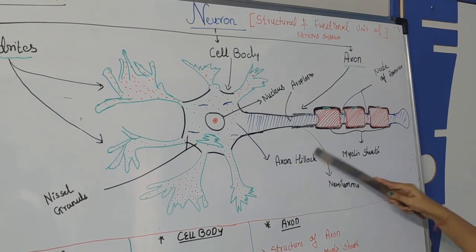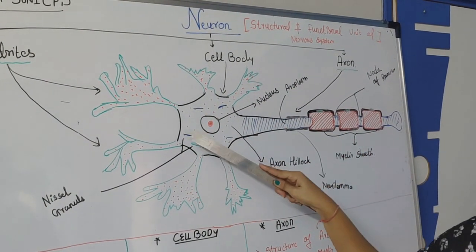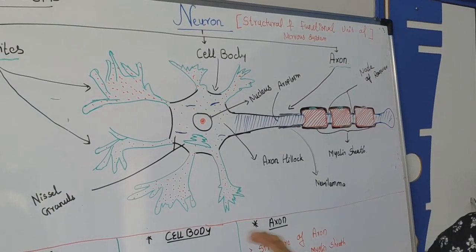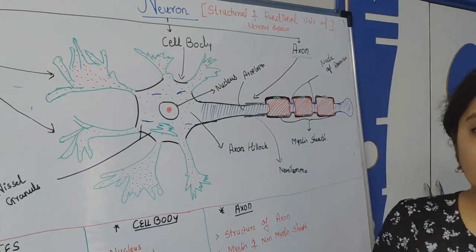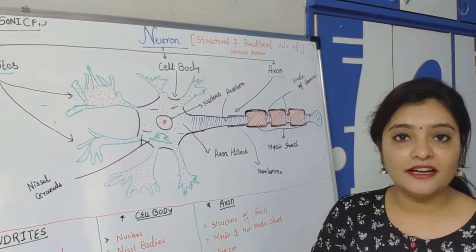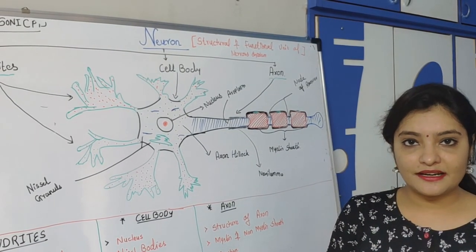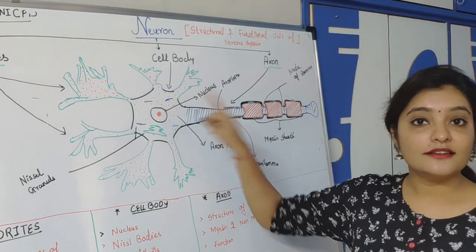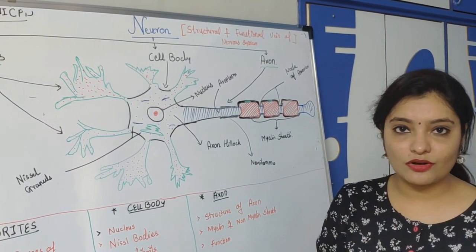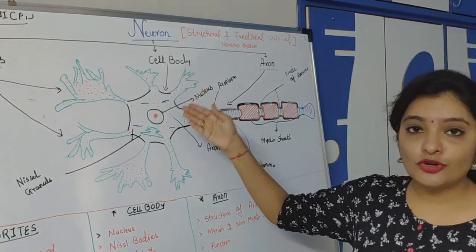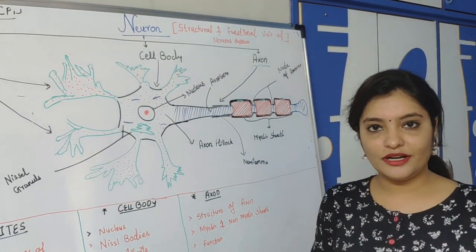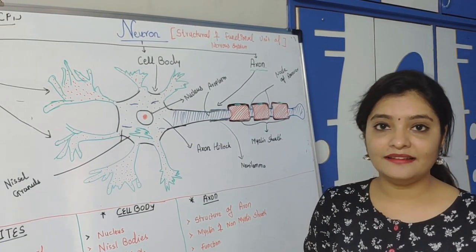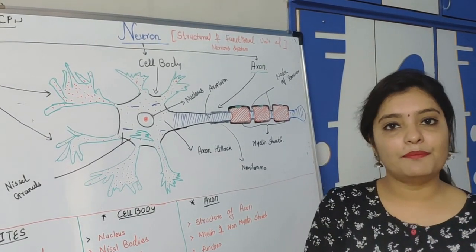Second, this cell body has a nucleus. But basically the cells of the other parts have a centrisome. What is the function of centrisome? Centrisome is mainly responsible for the division of the cell. But this neuron does not have centrisome near the nucleus. So this neuron cannot divide because it does not have centrisome. These are the mainly two basic differences between the neuron and the cells of the other parts of the body.